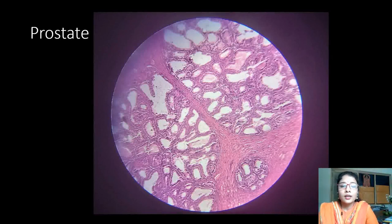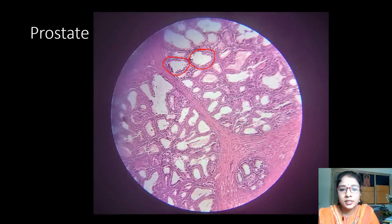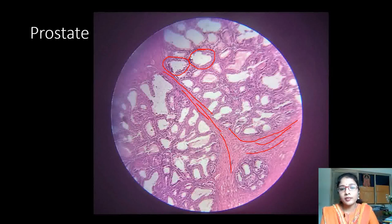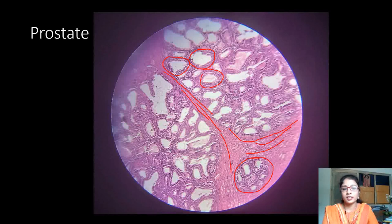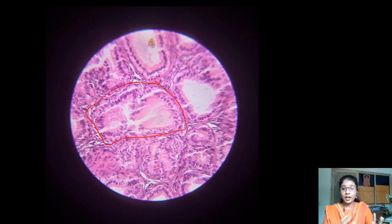The next slide is the prostate, which is very important clinically because carcinoma of the prostate is very common. The prostate is glandular tissue — we can see many acini or follicles which are glandular follicles lined by columnar cells. In between the follicles there is thick fibromuscular tissue acting as septa dividing the prostate into lobules, with acini present within each lobule. At 45x magnification we can appreciate each glandular follicle or acinus.